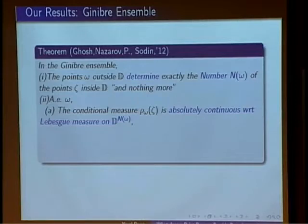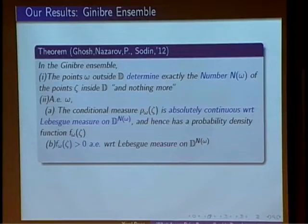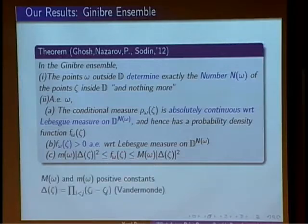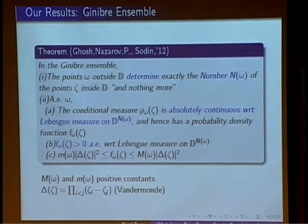However, the hard thing is not that — that's actually easy to prove. The hard thing is the statement that the points outside determine the number of points inside and nothing more: they don't tell you where the points are inside. What 'nothing more' means is that given the points outside, the conditional distribution inside is just equivalent to n(ω) points independently distributed according to Lebesgue measure in the domain. Moreover, the conditional density of these points can be bounded in terms of a Vandermonde — so the density of the zeros inside is just a Vandermonde squared, up to constants that depend on the points outside.